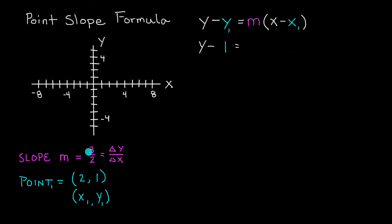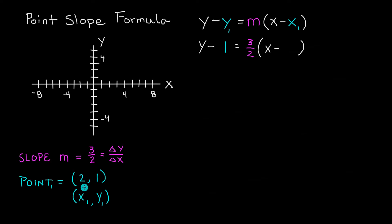Remember, slope is the change in the y direction compared to the change in the x direction. That means for every positive 3 units we go in the y direction, we also go positive 2 units in the x direction. So plugging our slope in: we have 3 over 2, and that gets multiplied by the quantity x minus x1. For x1 we use the x component of the given point, which has the value 2.